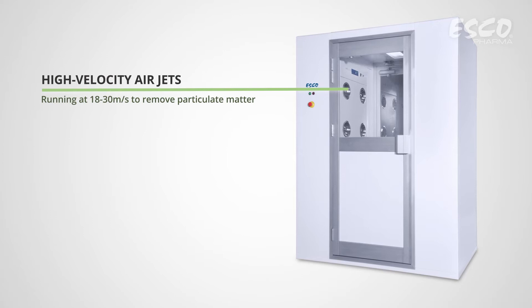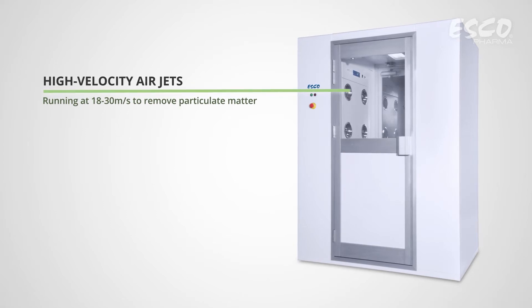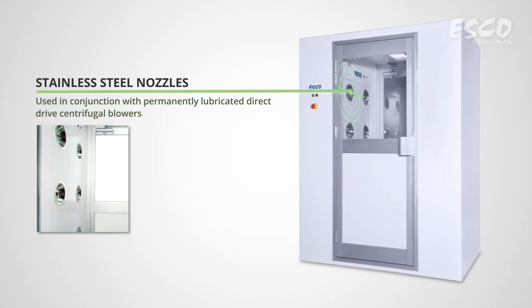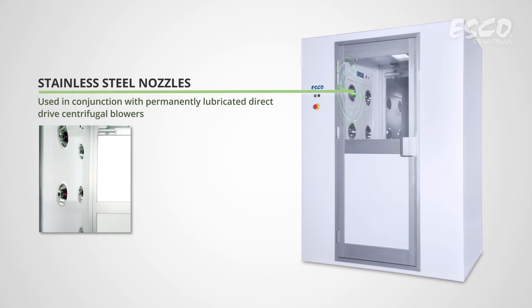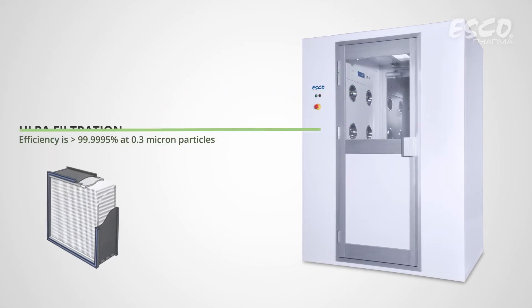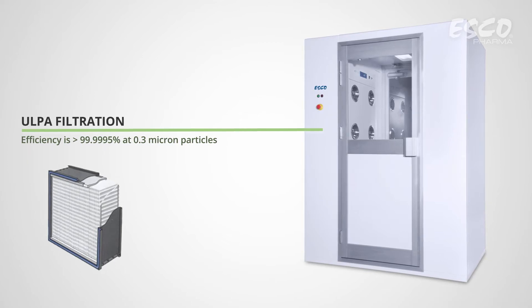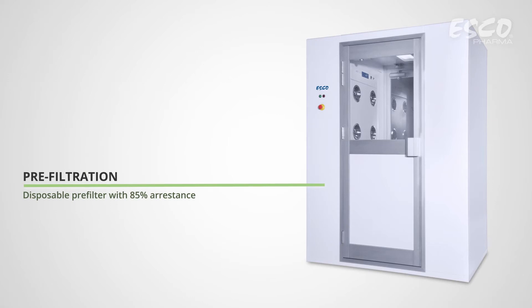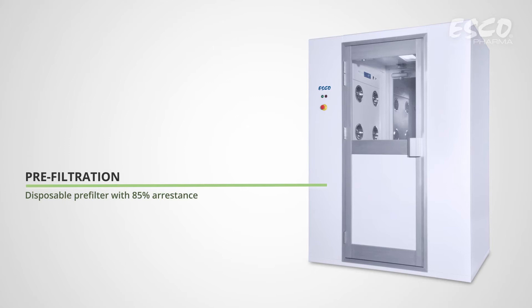High-velocity shower jets running at 18 to 30 meters per second ensure efficient scrubbing action to remove particulate matter. Permanently lubricated direct-drive centrifugal blowers are used in conjunction with stainless steel air nozzles. The typical efficiency of the ULPA filter is greater than 99.9995% at 0.3 micron particles. A disposable pre-filter with 85% efficiency extends the life of the main filter.